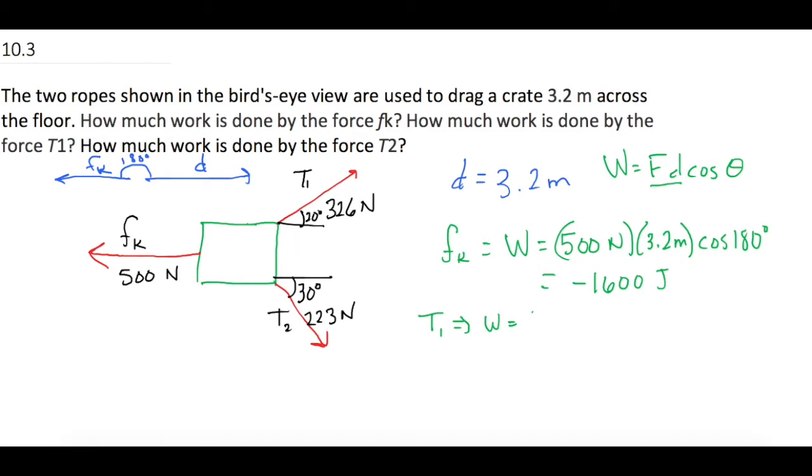that force which is 326 newtons, times 3.2 meters times the cosine of 20 degrees. That equals 980.287 joules.